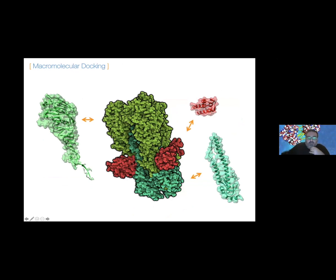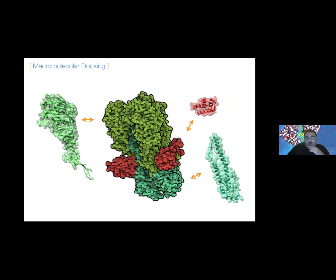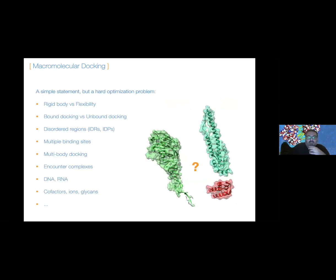We are talking about the macromolecular docking problem, which is very easy to state. Starting from the different partners — for example three different copies — we end up solving this puzzle into a final complex like hemagglutinin, which is similar to the spike protein from SARS-CoV-2. Macromolecular docking is easy to state but is a very hard optimization problem in terms of computation. We can consider partners as rigid-body partners, like rocks, or as flexible and dynamic in nature.